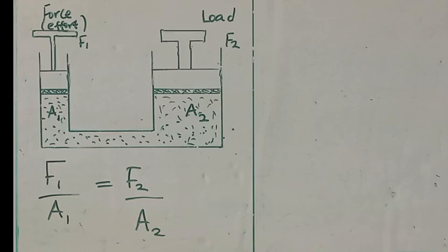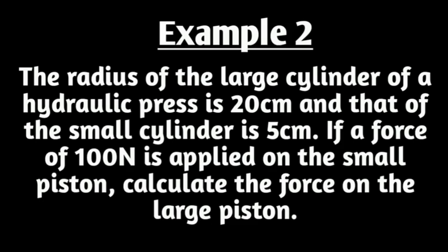Now, how do we solve examples under this? Example 2. The radius of the large cylinder of hydraulic press is 20 cm. And that of the small cylinder is 5 cm. If a force of 100 Newton is applied on the small piston, calculate the force on the larger one.